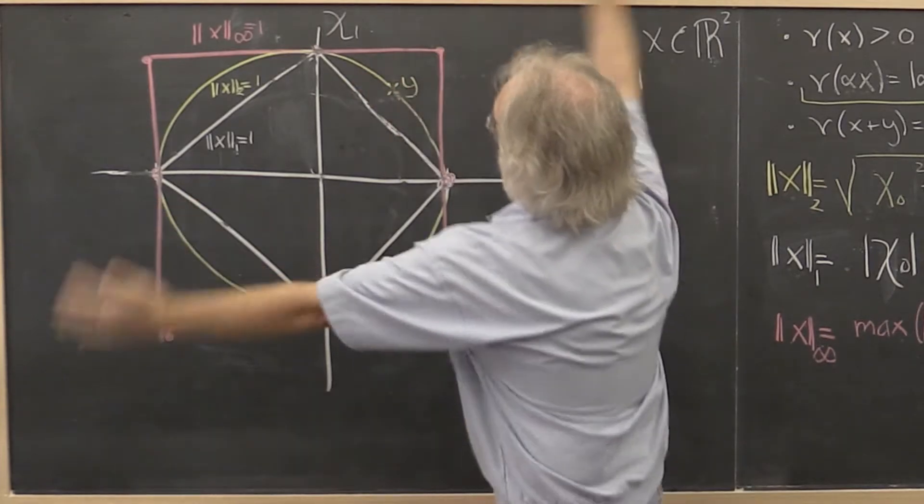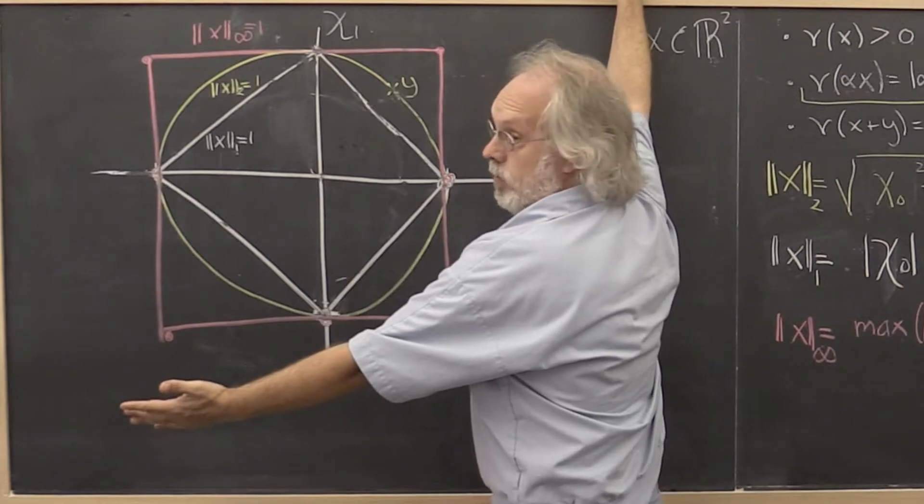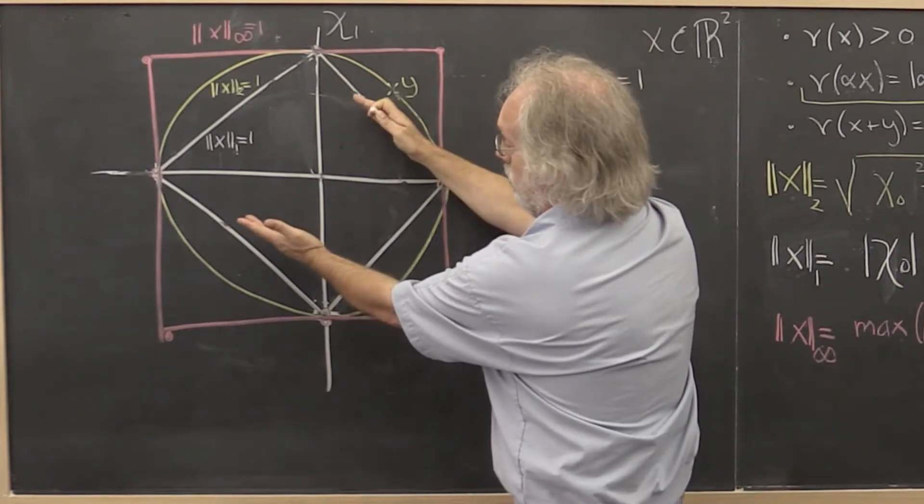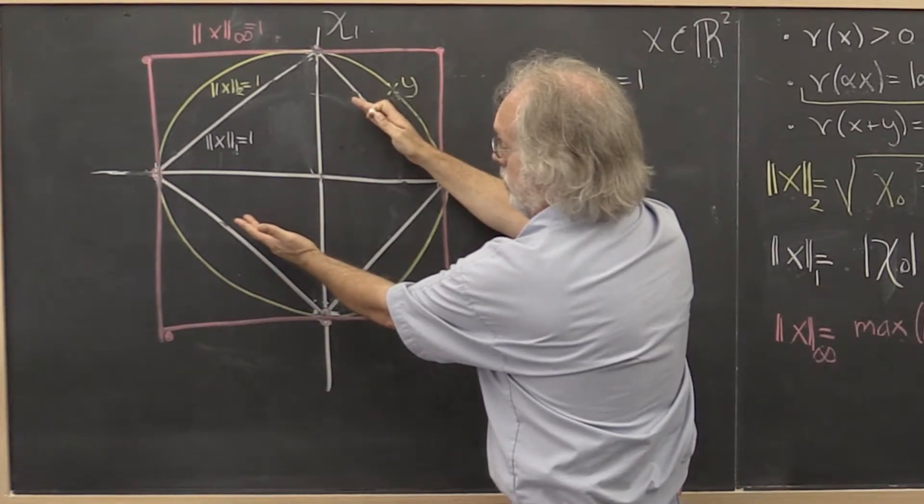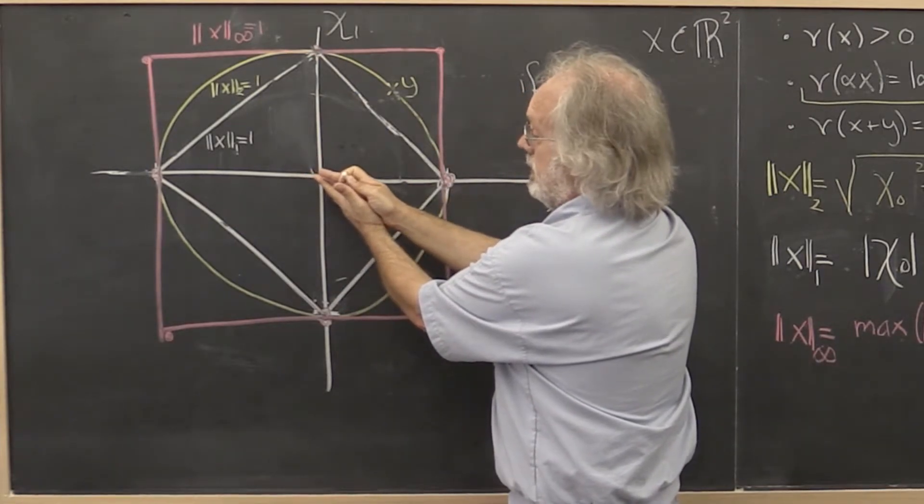At all points outside, the 1 norm is greater than 1. And for all vectors that point to points inside of this, the 1 norm is less than 1.